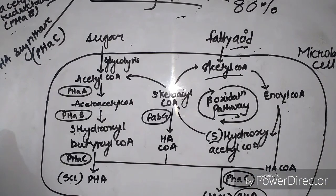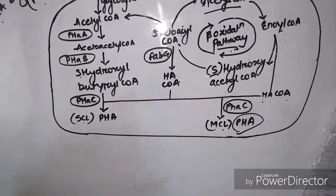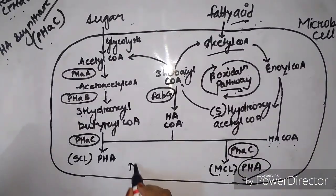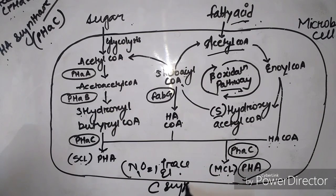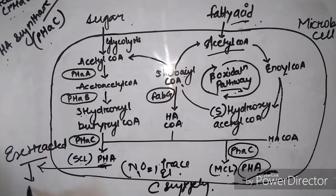Nitrogen, oxygen, and other trace elements, and also when there is excess supply of carbon source. These PHA from the bacterial cell are extracted and purified by optimizing the conditions.